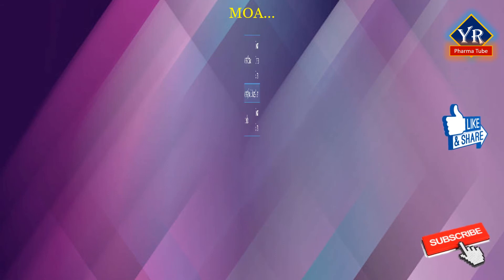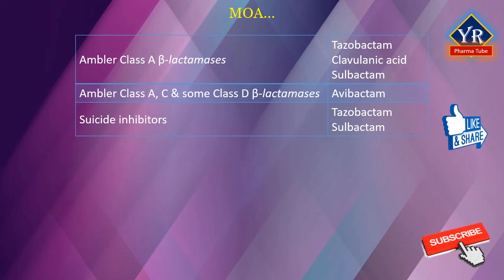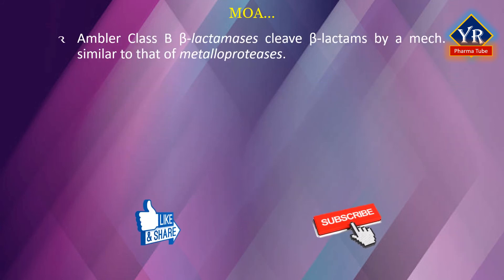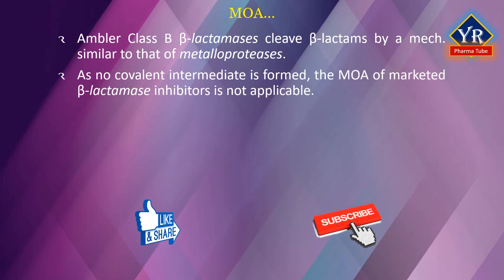Currently available beta-lactamase inhibitors are effective against Ambler class A beta-lactamases — for example, tazobactam, clavulanate, and sulbactam — and against Ambler class A, C, and some class D beta-lactamases — for example, avibactam. Like beta-lactam antibiotics, they are processed by beta-lactamases to form an initial covalent intermediate. Unlike beta-lactam antibiotics, the inhibitors act as suicide substrates — for example, tazobactam and sulbactam — which ultimately leads to degradation of beta-lactamase. Avibactam, on the other hand, does not contain a beta-lactam ring, i.e. it is a non-beta-lactam beta-lactamase inhibitor, and instead binds reversibly. Ambler class B beta-lactamases cleave beta-lactams by a mechanism similar to that of metalloproteases. As no covalent intermediate is formed, the mechanism of action of marketed beta-lactamase inhibitors is not applicable.